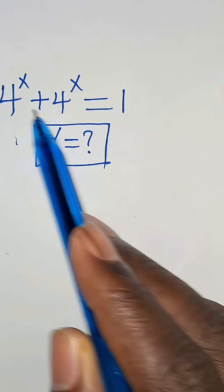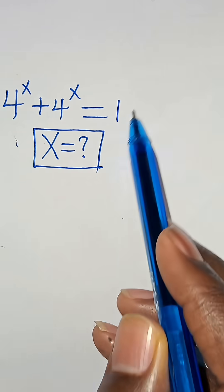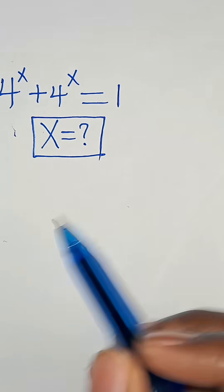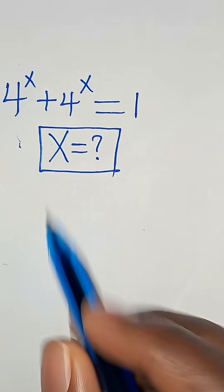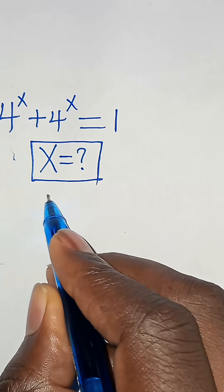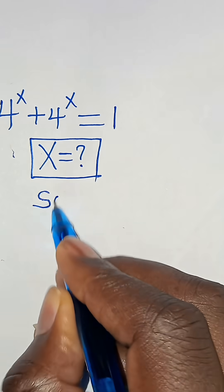4 to the power of x plus 4 to the power of x is equal to 1. What is the value of x? Now, solution.